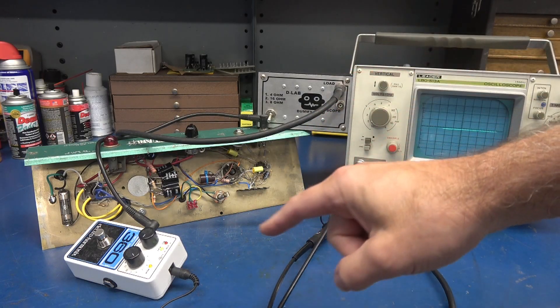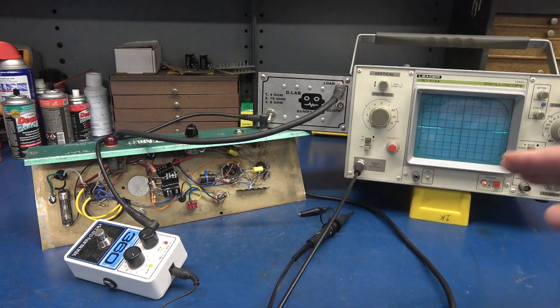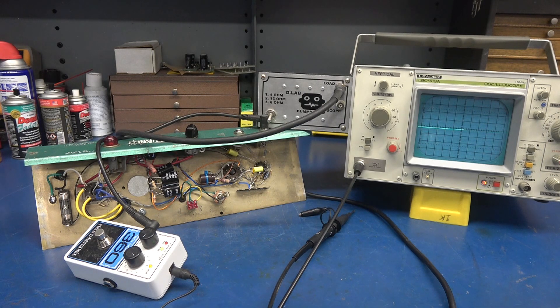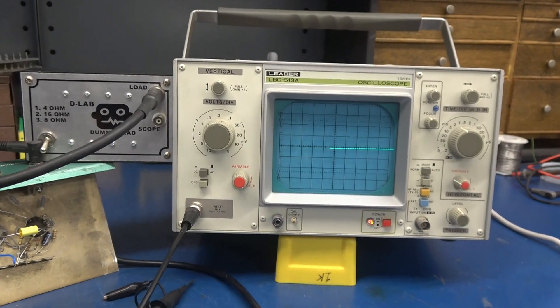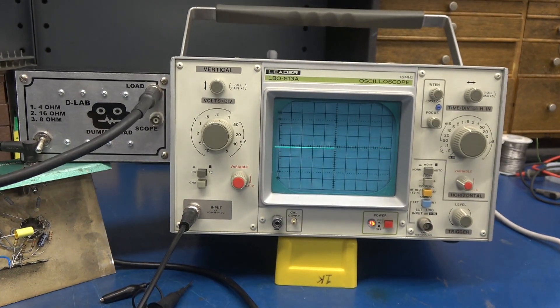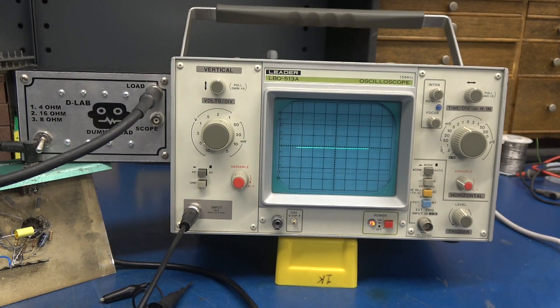We'll have a dummy load. We're going to use a looper for the input and monitor on a Leader LBO 513A single channel 15 megahertz scope. So here's the star of the show, an old CRT type analog oscilloscope.